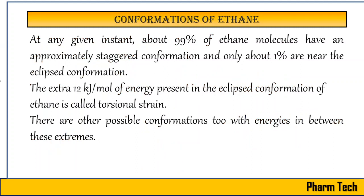At any given time, if you have one mole of ethane, 99% of the ethane molecules will always be in the more stable staggered conformation, and only 1% will be in the eclipsed conformation. Molecules turn from staggered to eclipsed and back because that bond rotation is very easy — it requires only 12 kilojoule per mole of energy. This energy barrier is called the torsional strain, and with this small amount of energy, interconversion between the two forms is always occurring.